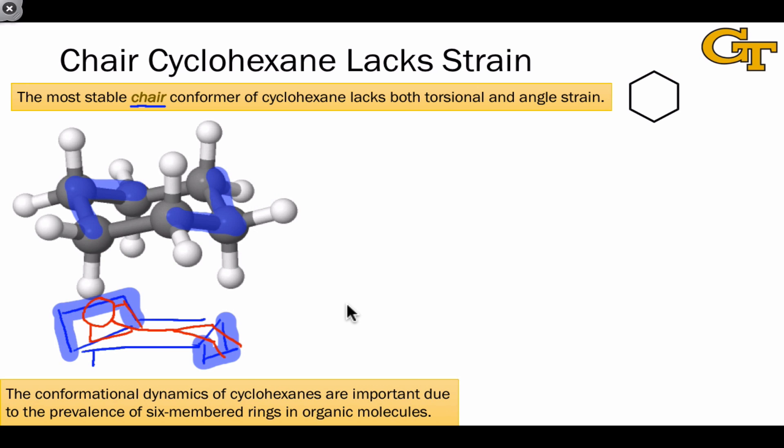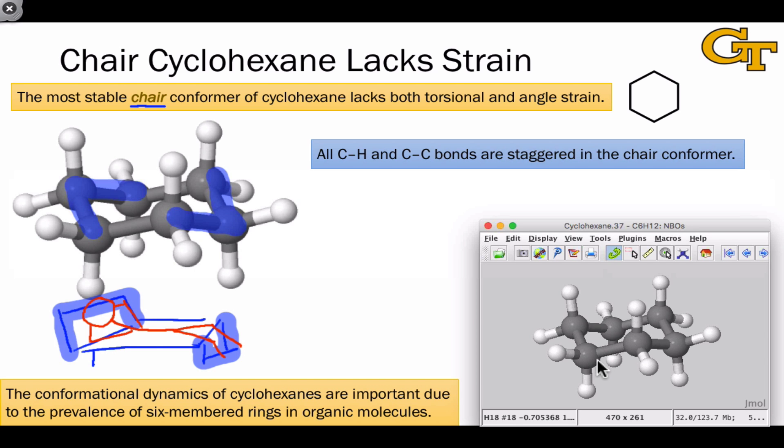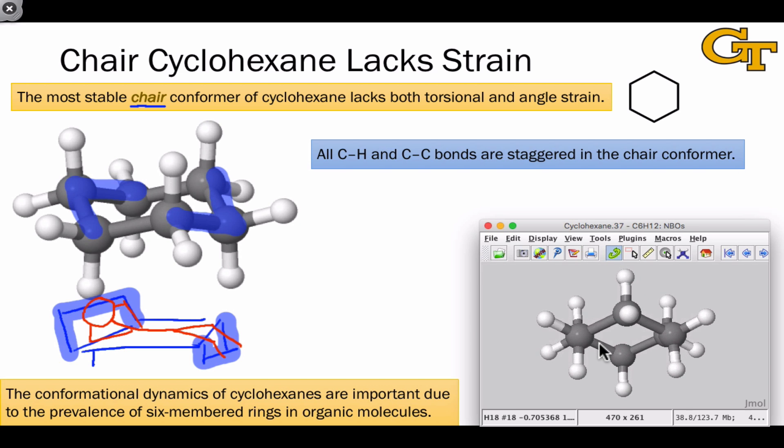The interesting thing about the chair conformation is that we finally reach a point where torsional and angle strain are at a minimum. If we look at a molecular model of the chair conformer, we see that all of the CC and CH bonds are perfectly staggered. We can see this by looking down one of the carbon-carbon bonds in a Newman projection view. We see this really nice 60-degree angle between the CH bonds and even the carbon-carbon bonds within the ring are able to be perfectly staggered. This means that torsional strain, which we've associated with the eclipsing of bonds, is at a minimum in this perfectly staggered conformation.